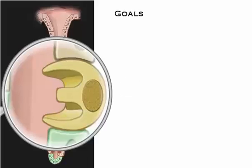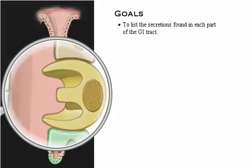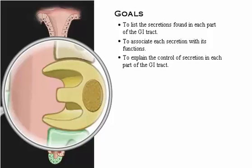Your goals for learning are to list the secretions found in each part of the GI tract, to associate each secretion with its functions, and to explain the control of secretion in each part of the GI tract.